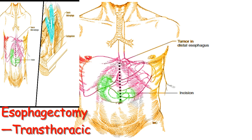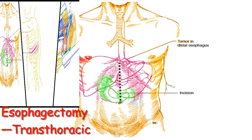Transthoracic esophagectomy uses two incisions: a midline abdominal incision and a thoracotomy. An upper midline supraumbilical incision from the xiphoid process to the umbilicus is used to begin the abdominal portion of the procedure. The incision should be extended cephalad to the left of the xiphoid process to adequately expose the esophageal hiatus. A self-retaining retractor can facilitate exposure of the upper abdomen.